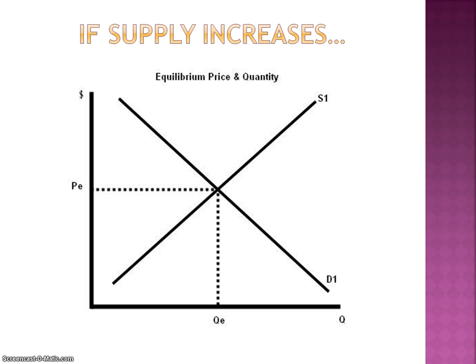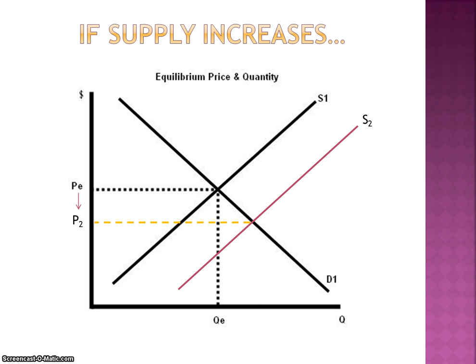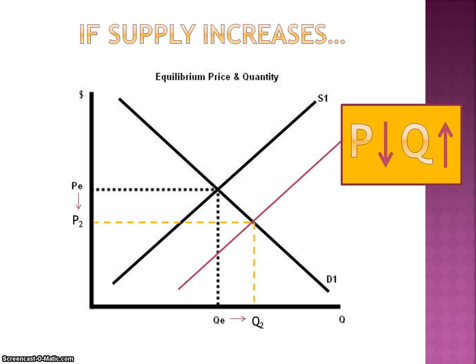If supply increases and that supply curve shifts to the right — for whatever reason, any factor from what we've learned — that equilibrium is going to move to the right and farther down, showing that the price drops and the equilibrium quantity in the market rises. For example, if a new technology is adopted for the production of an item, that production is going to be more efficient, more will be produced, and the price of that good will be lower.